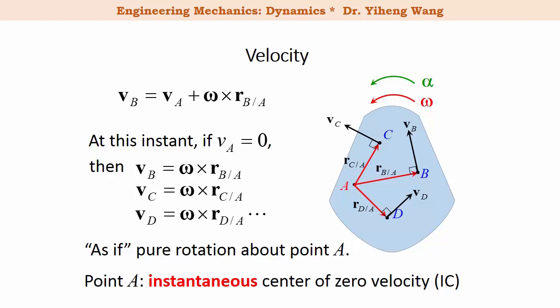If we can identify the instantaneous center of zero velocity for a rigid body at a given instant, then the general plane motion reduces to pure rotation, which is a lot easier in terms of calculation.